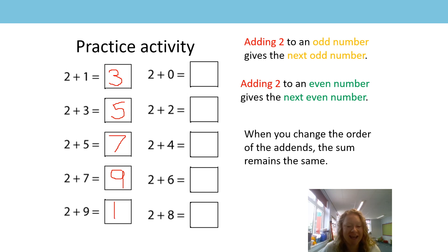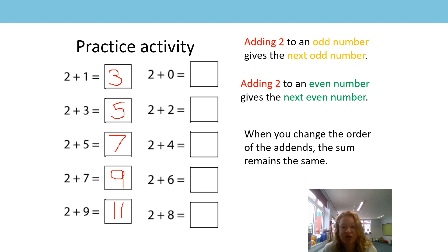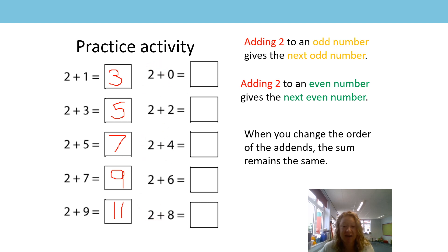And if we're on nine, the next odd number when we add two will be eleven. Good job, well done everyone! So on this side we had exactly the same pattern, but here we've got even numbers, so we need our other generalization: adding two to an even number gives the next even number. They also begin with two, just like before, so again we're going to think: when you change the order of the addends the sum remains the same.